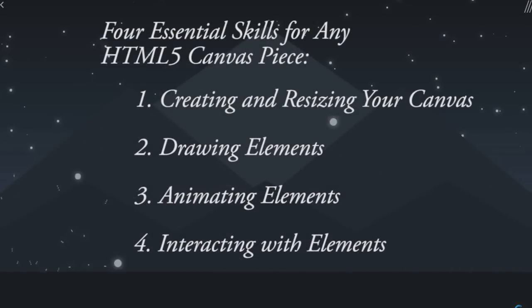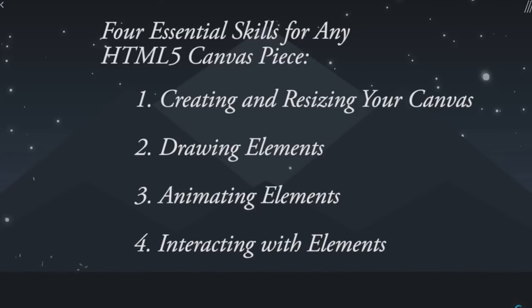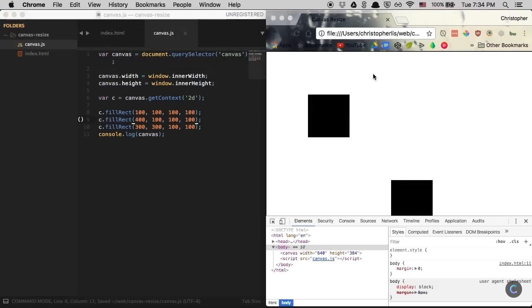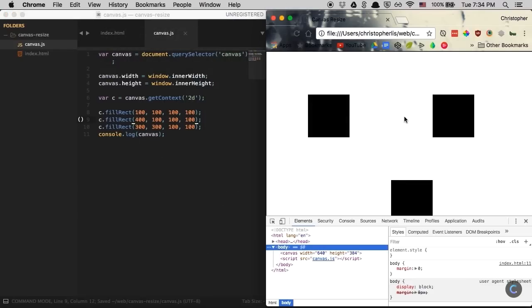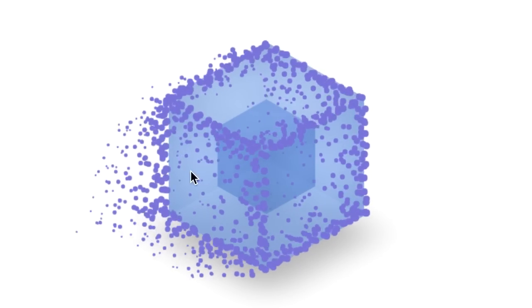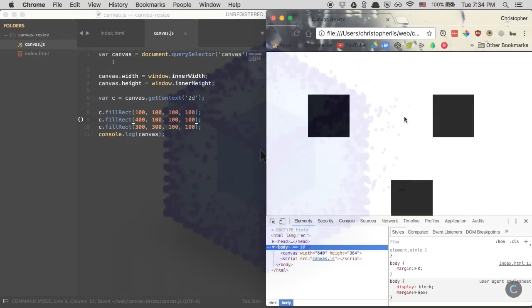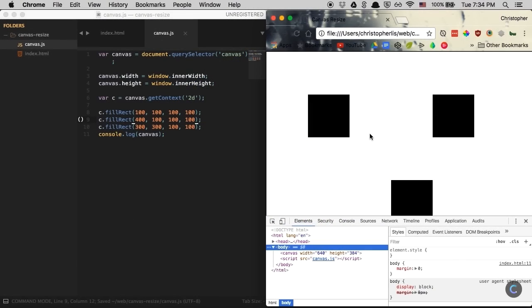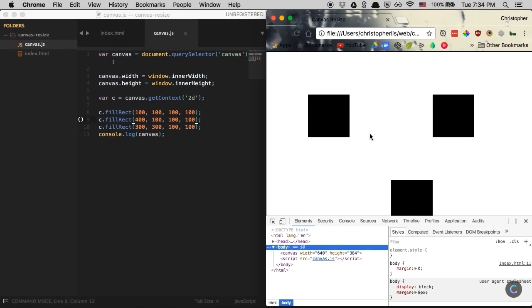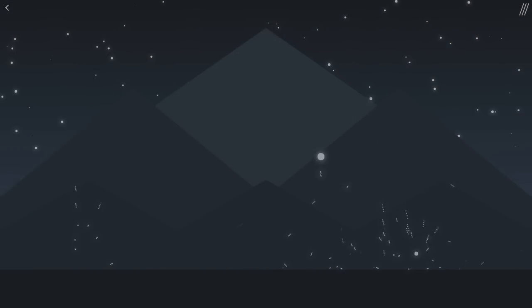Looking back at the last episode, we covered skill number one of how to become a canvas pro — creating and resizing your canvas. We also covered the most rudimentary shape we could draw with the canvas: the rectangle. Now the end goal here is still to create amazing visuals, but there's only so much we can create with just rectangles and squares. To get the most out of our visuals, we need to understand the full extent of what objects we can draw and how to draw them.